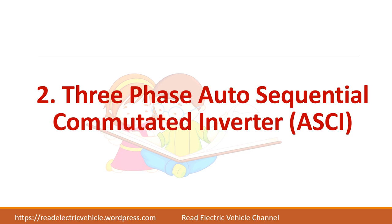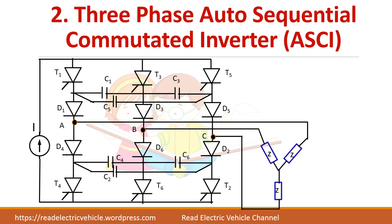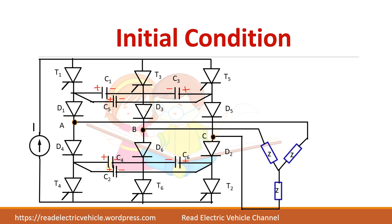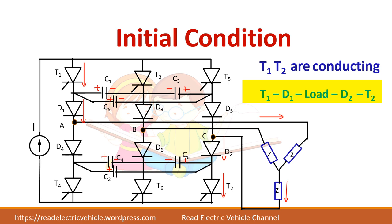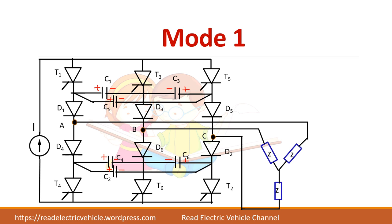Now let us see about the three phase inverter. The operation is similar to the single phase inverter. This is the circuit diagram with six thyristors T1 to T6. Let us consider the initial condition that T1 and T2 are in conduction; at any time two devices will be in the on condition. The current flows through T1, D1, load, D2, and T2.